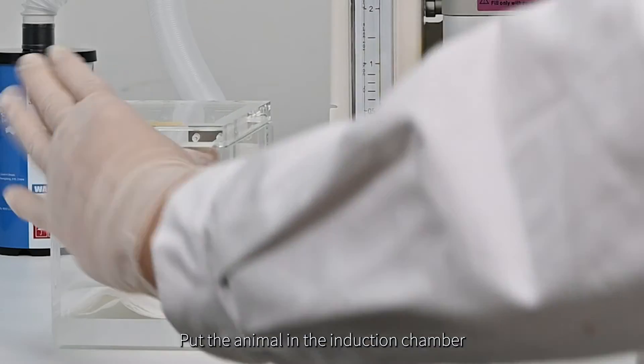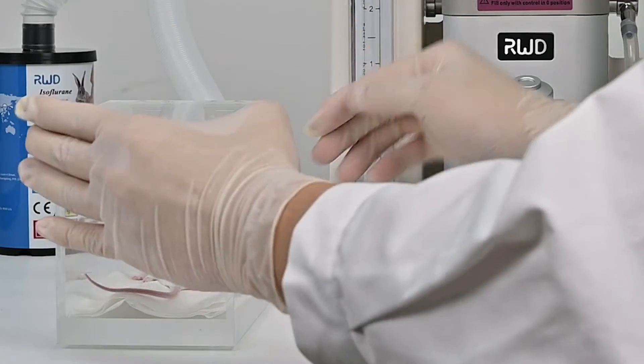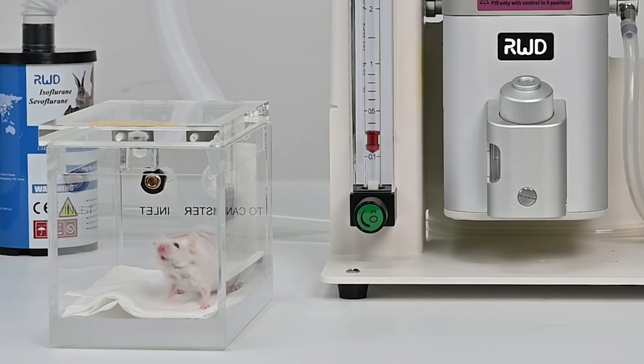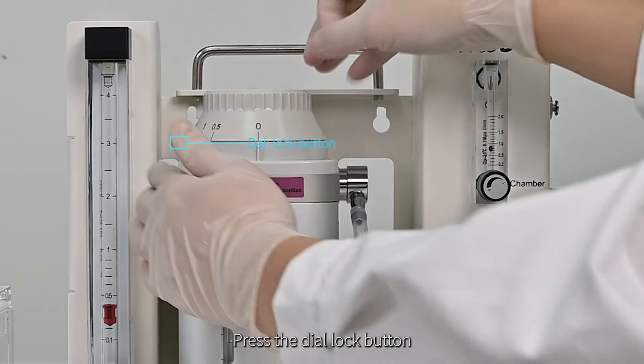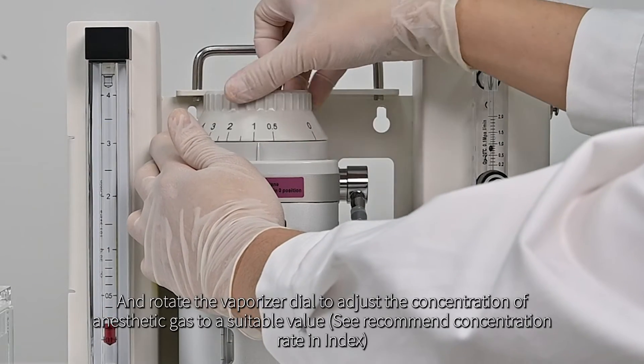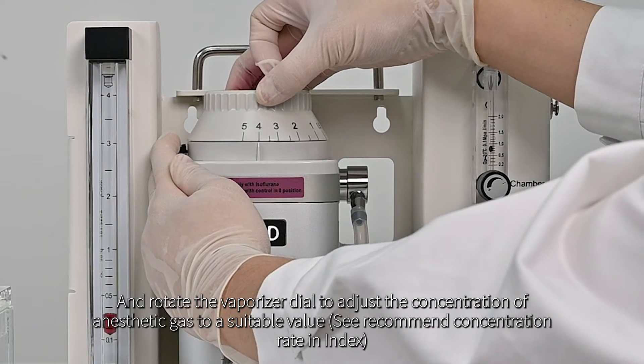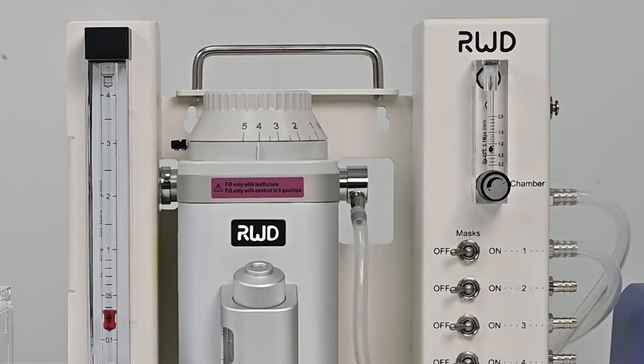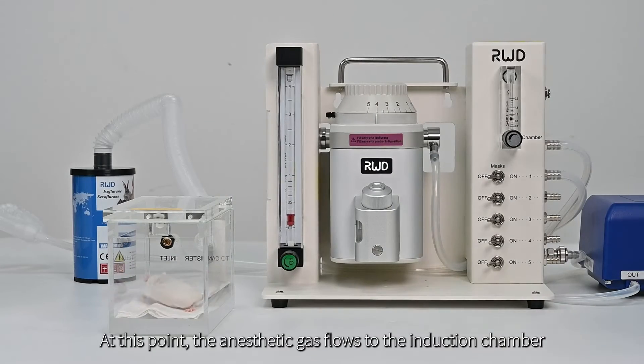Put the animal in the induction chamber. Press the dial lock button and rotate the vaporizer dial to adjust the concentration of anesthetic gas to a suitable value. At this point, the anesthetic gas flows to the induction chamber.